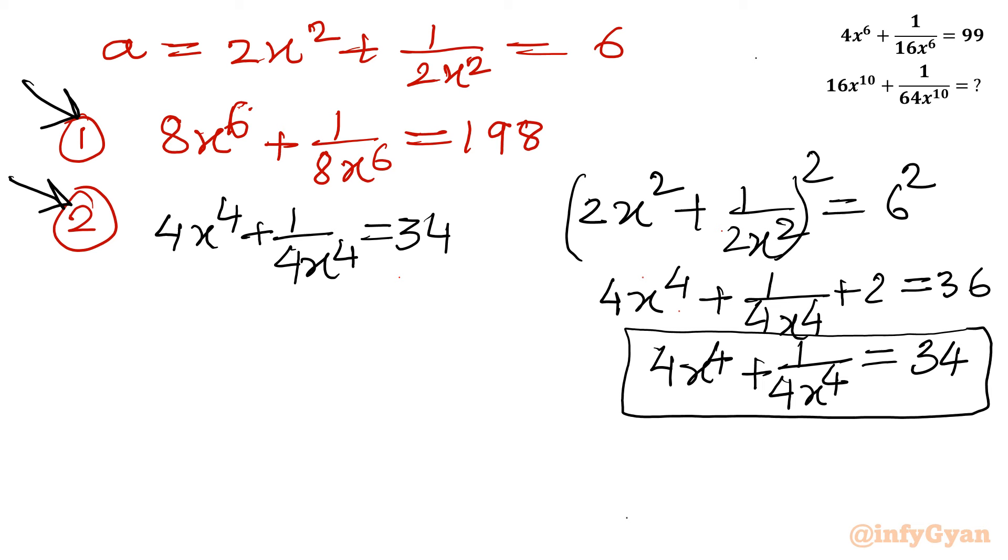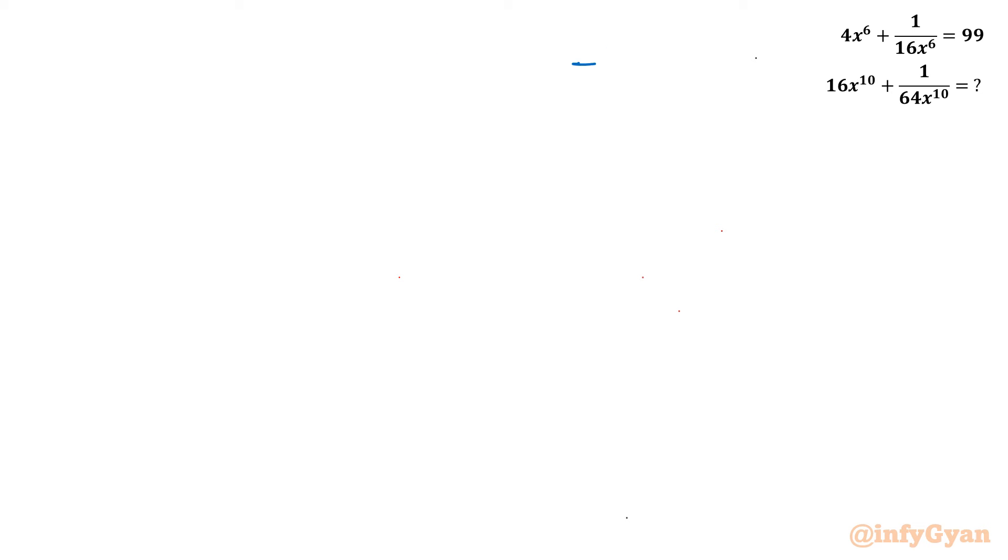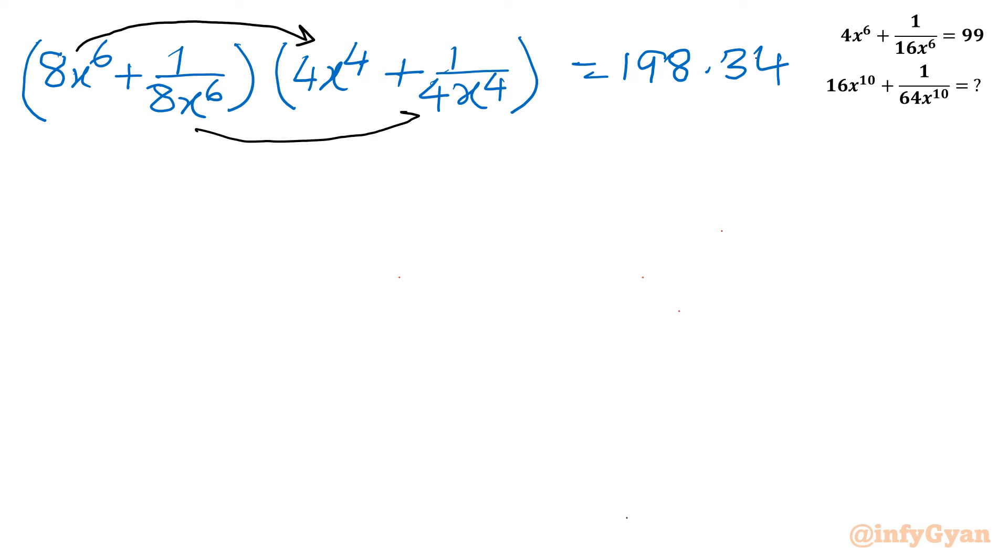Now I will take the product of equations 1 and 2. So let's multiply them. The right hand side will be 198 times 34. For the left hand side, multiplying term by term: 8x^6 times 4x^4 gives 32x^10, and 1 over 8x^6 times 1 over 4x^4 gives 1 over 32x^10. The cross multiplication gives 8x^6 times 1 over 4x^4 which is 2x^2, and 1 over 8x^6 times 4x^4 which is 1 over 2x^2. Right hand side product is 6732.